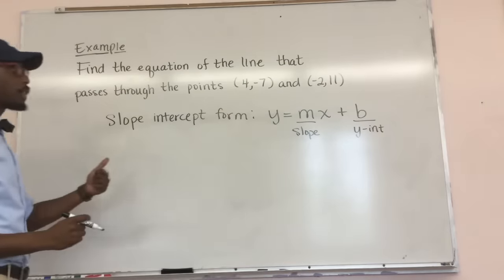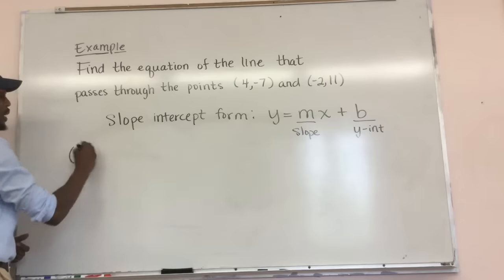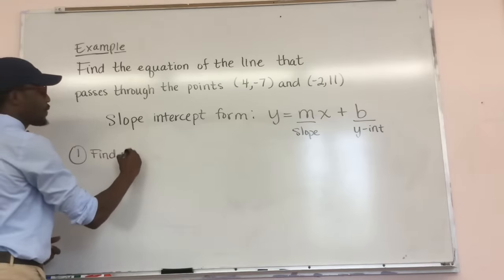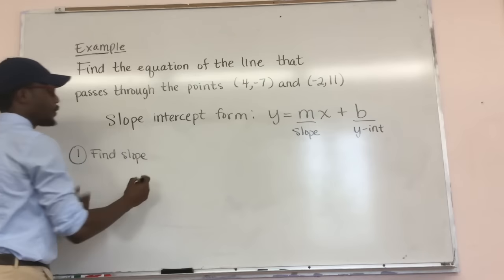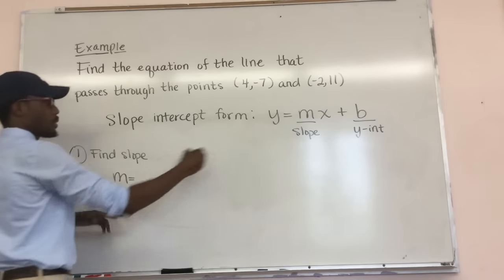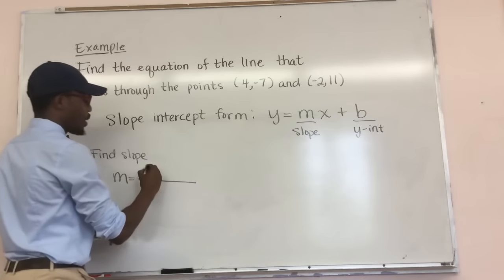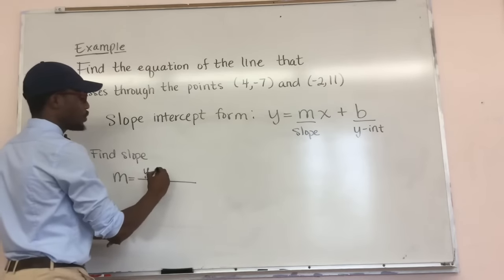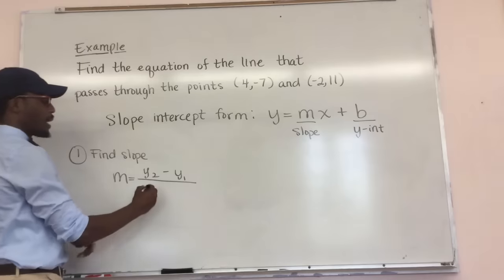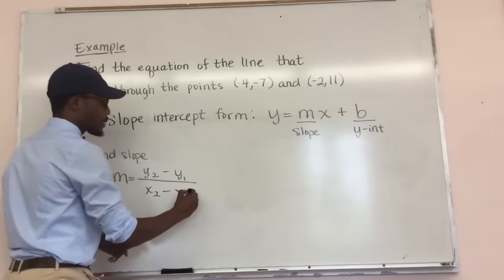First things first, we're going to try to find our slope. In order to find our slope, we're going to use a formula. The formula for our slope M — remember, M is our slope — is M = (Y2 - Y1) / (X2 - X1).